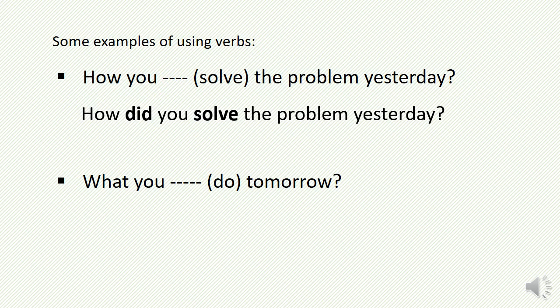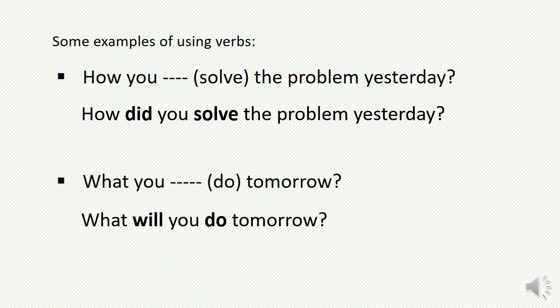Then the next one: 'What ___ you do tomorrow?' Dear students, which tense is this? The word 'tomorrow' indicates it is future tense. It is also an interrogative sentence, so we have to use an auxiliary verb before the subject. For future tense we use 'will,' so the correct sentence is: 'What will you do tomorrow?'